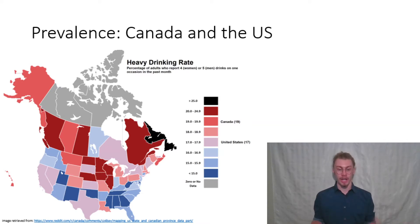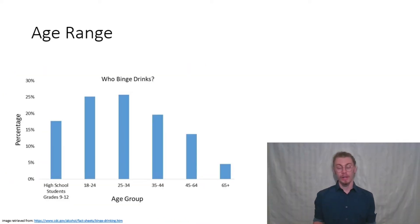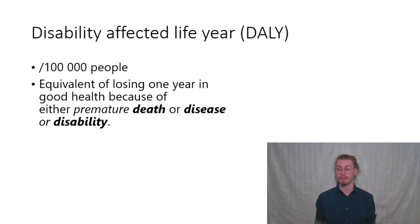Heavy drinking rates change based on geography. About 25% of the population aged 18 to 34 are binge drinking in a given month. There's a really interesting metric that describes the deleterious effects of differing actions called a disability-affected life year. This is a measure of per 100,000 people the equivalent of losing one year in good health because of either premature death, disease, or disability. Even though binge drinking is pretty widespread throughout the world, there are some places that are harder hit because of it.